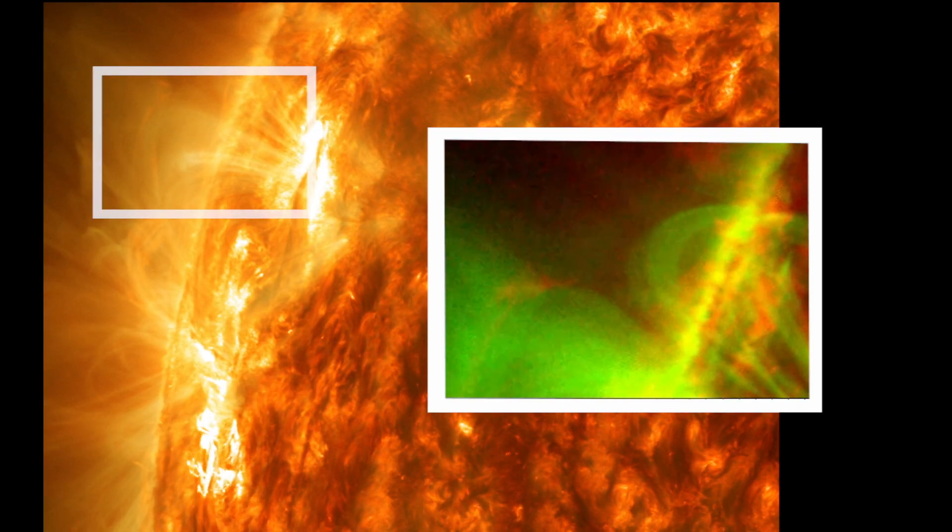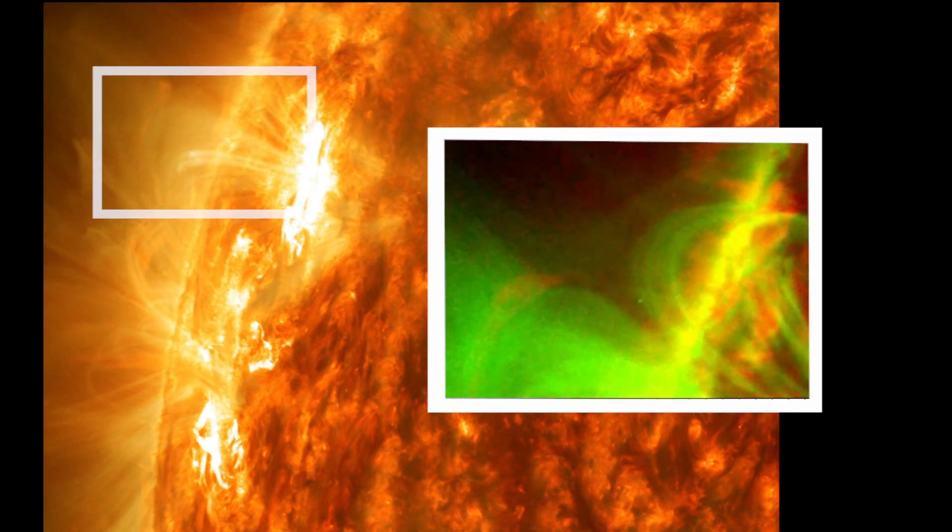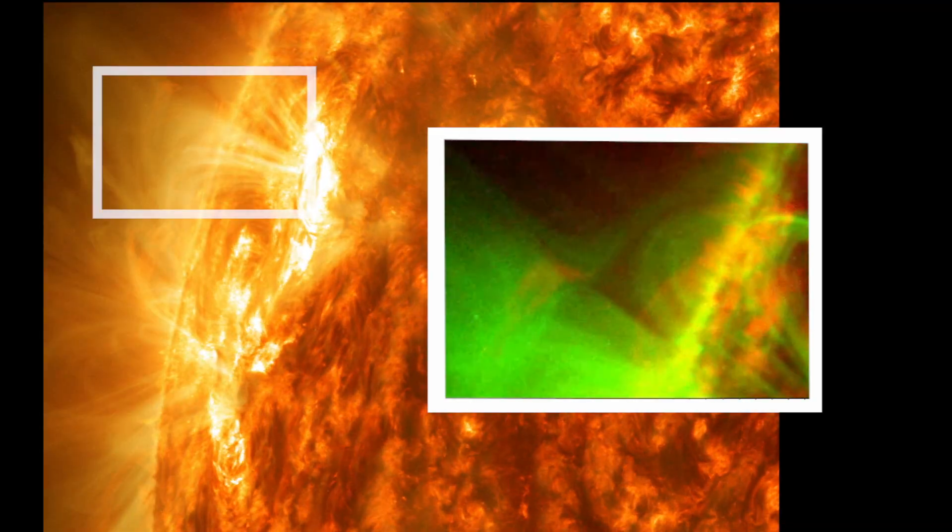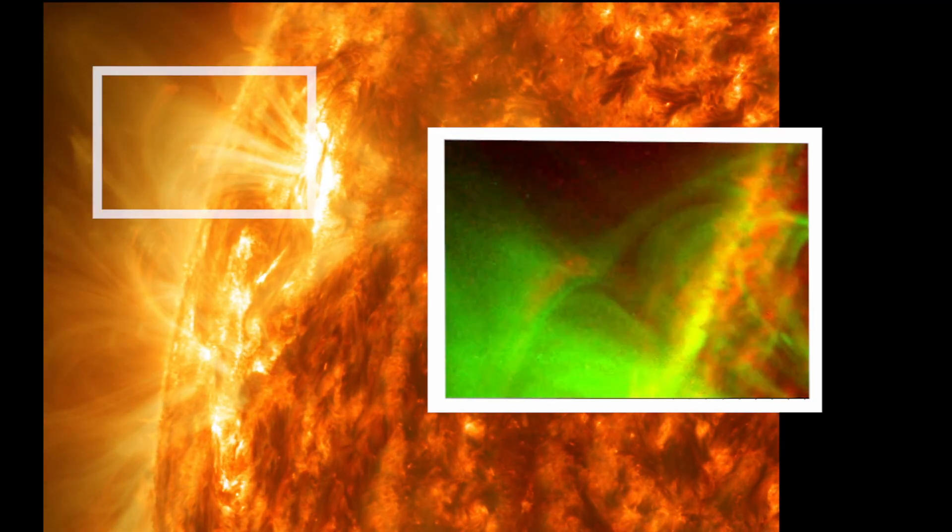The forced reconnection event was clearly visible when the scientists used observations from NASA's Solar Dynamics Observatory to look at a wavelength of light showing plasma heated to 6 million degrees.